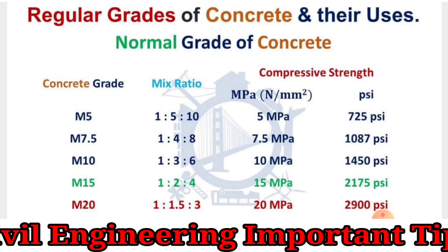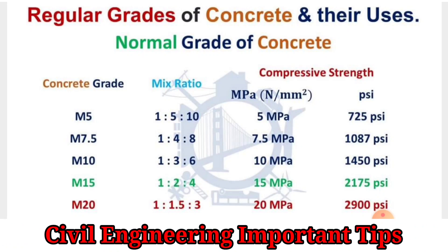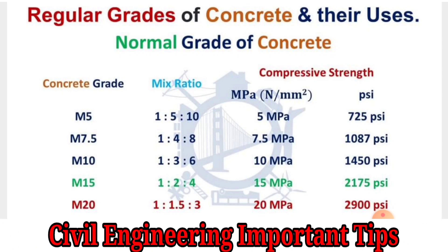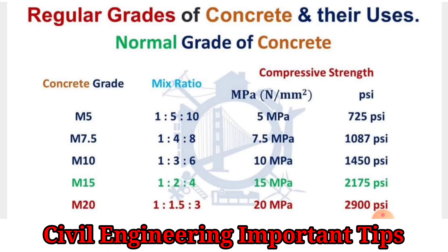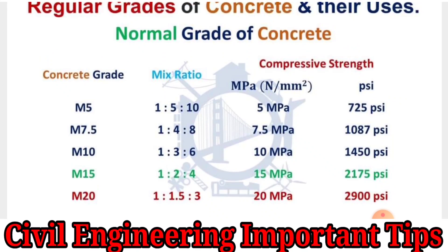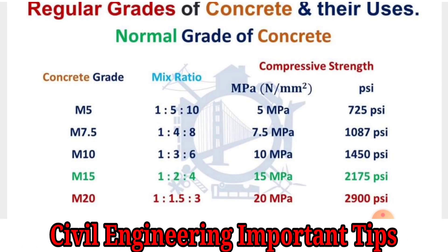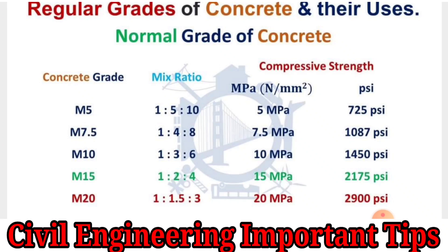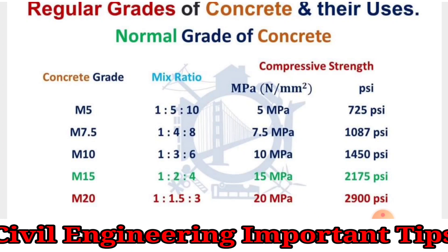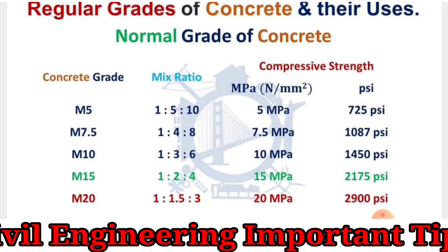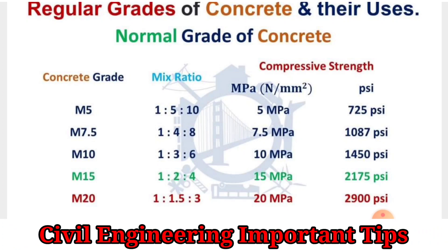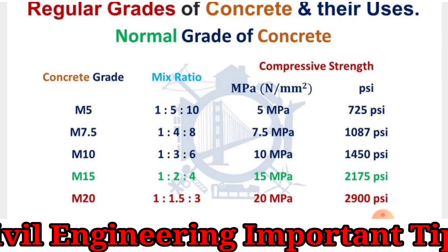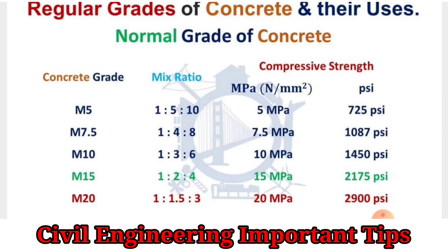Normal grades of concrete include M5, M7.5, M10, and M20. The mix design ratio for M5 is 1:5:10, and its compressive strength should be 5 MPa or 725 PSI in 28 days.